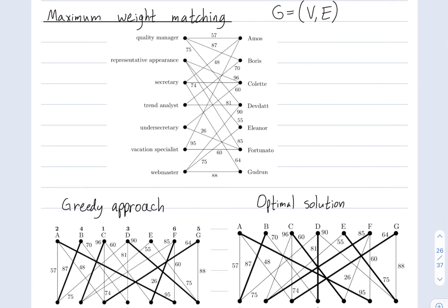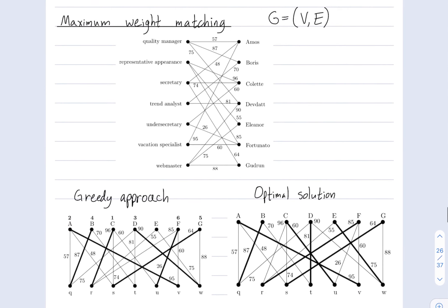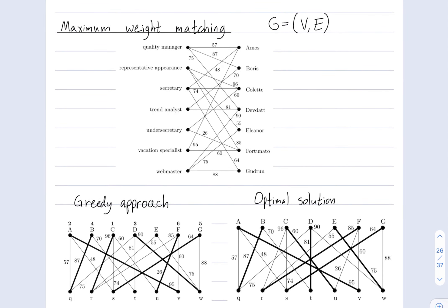We don't even match everybody to a role. So, when we take the greedy approach, person E doesn't get matched to a role and role T, this trend analyst, doesn't get filled. So, in some sense, we haven't even satisfied our expectation of matching each person to a role in a one-to-one fashion.